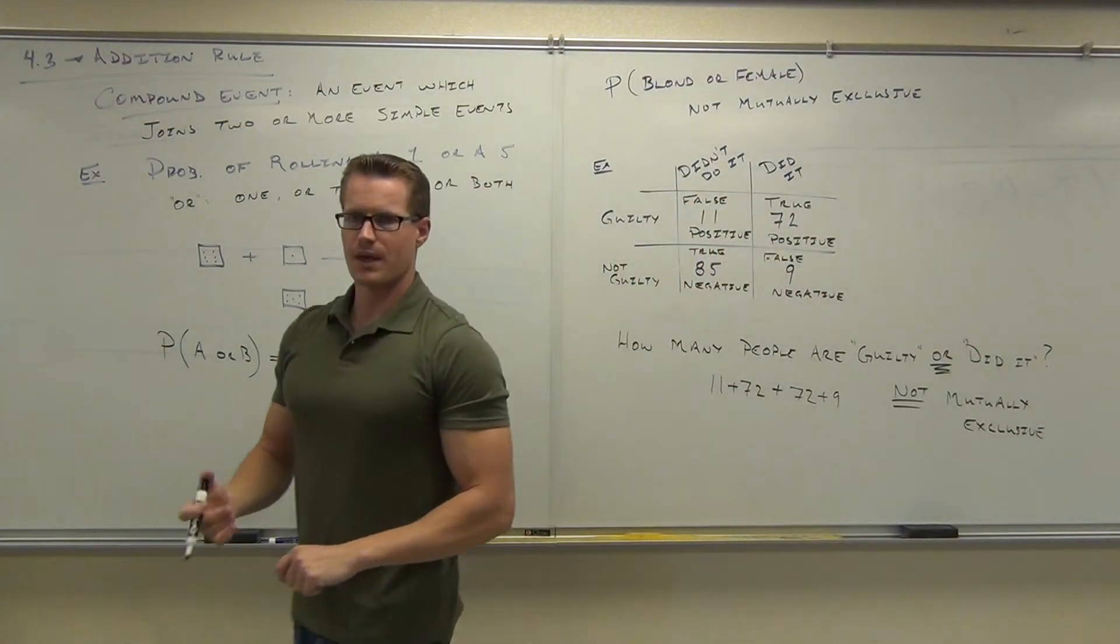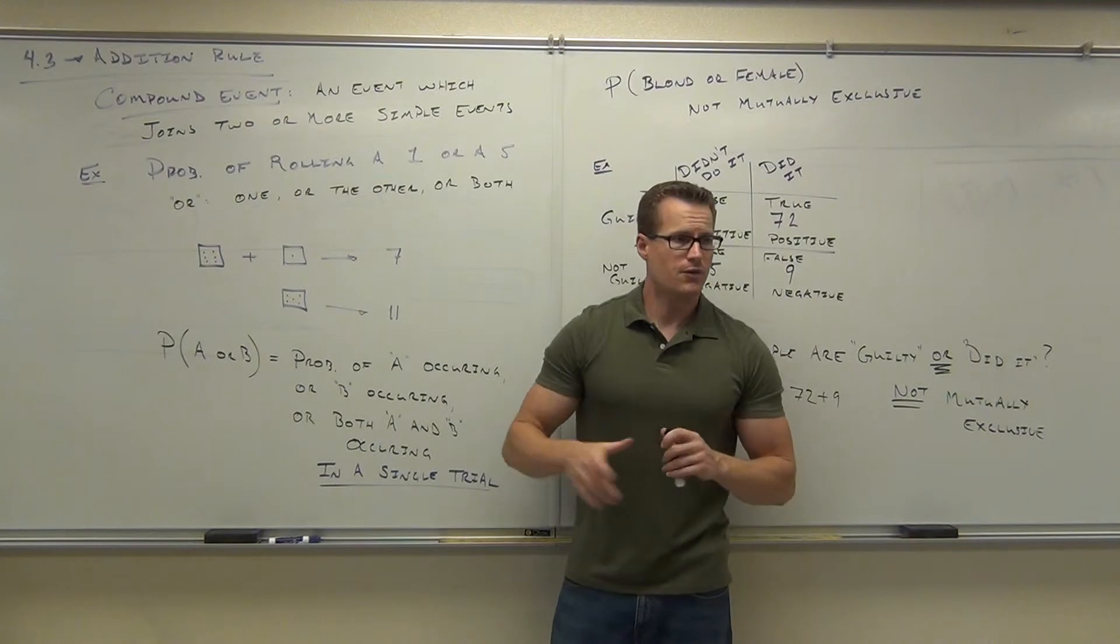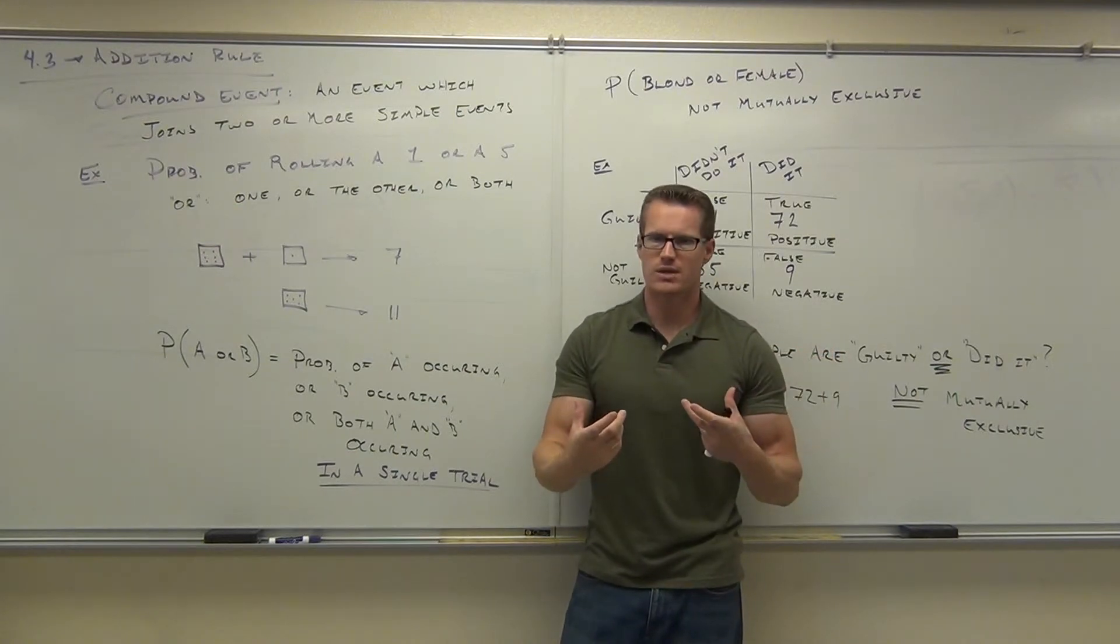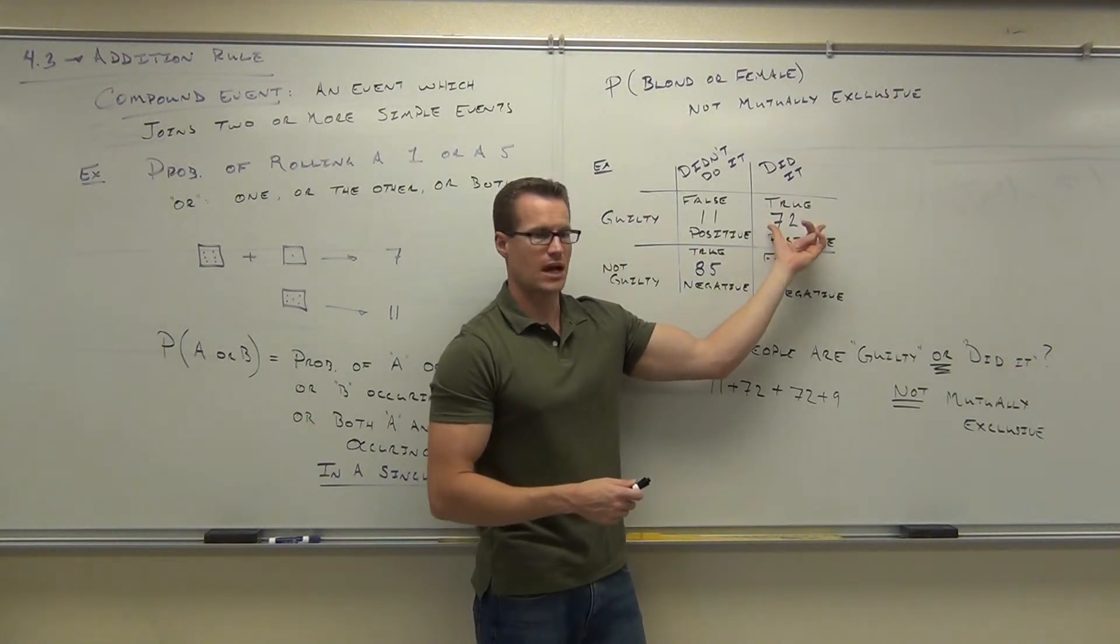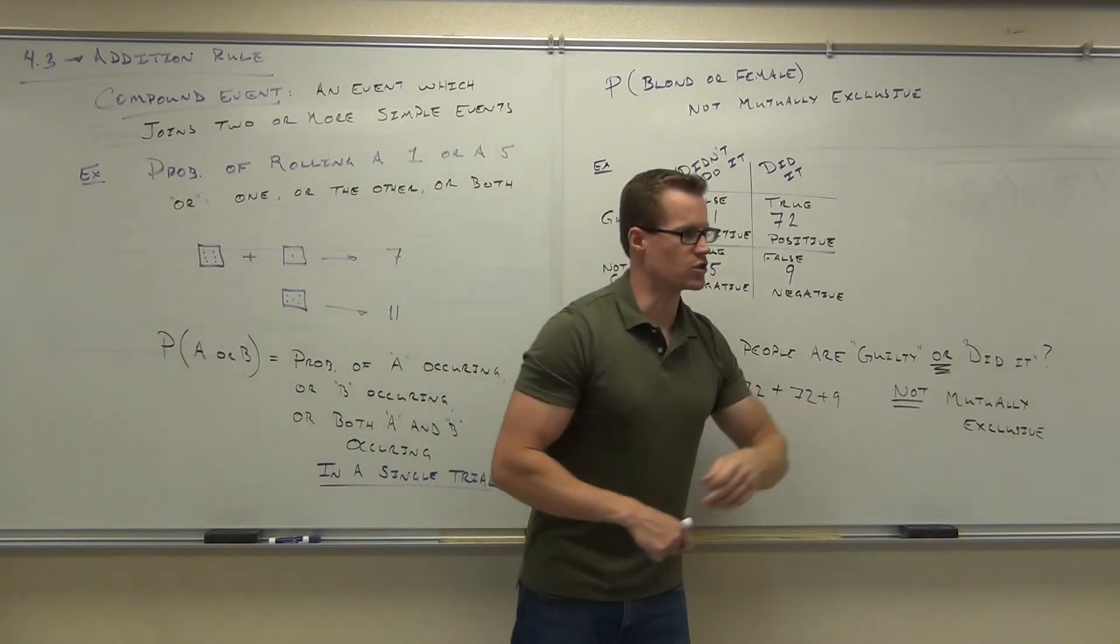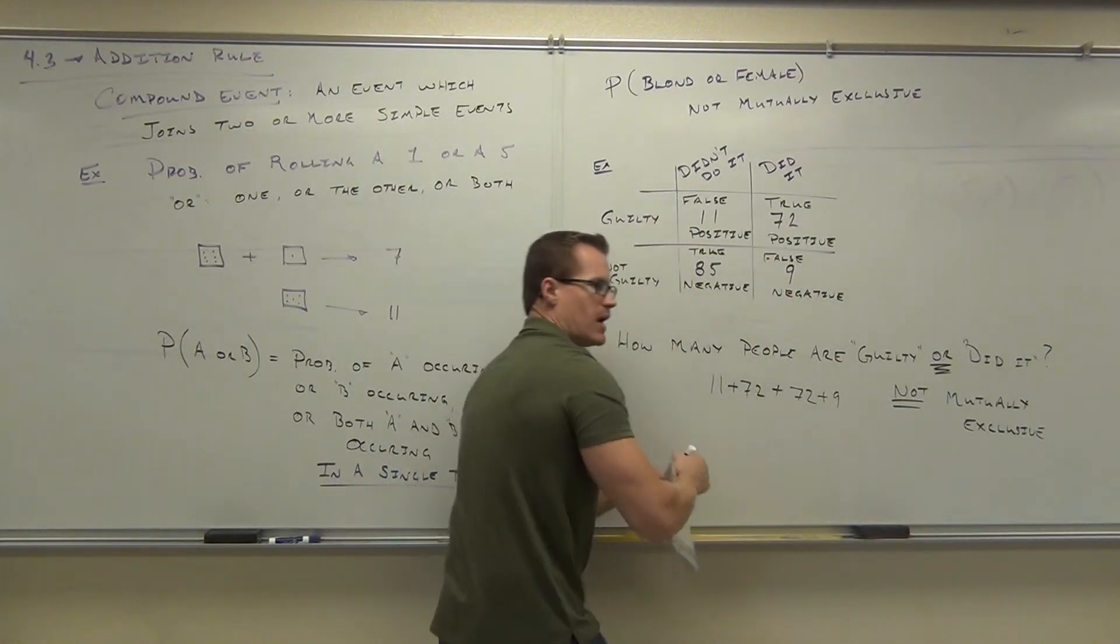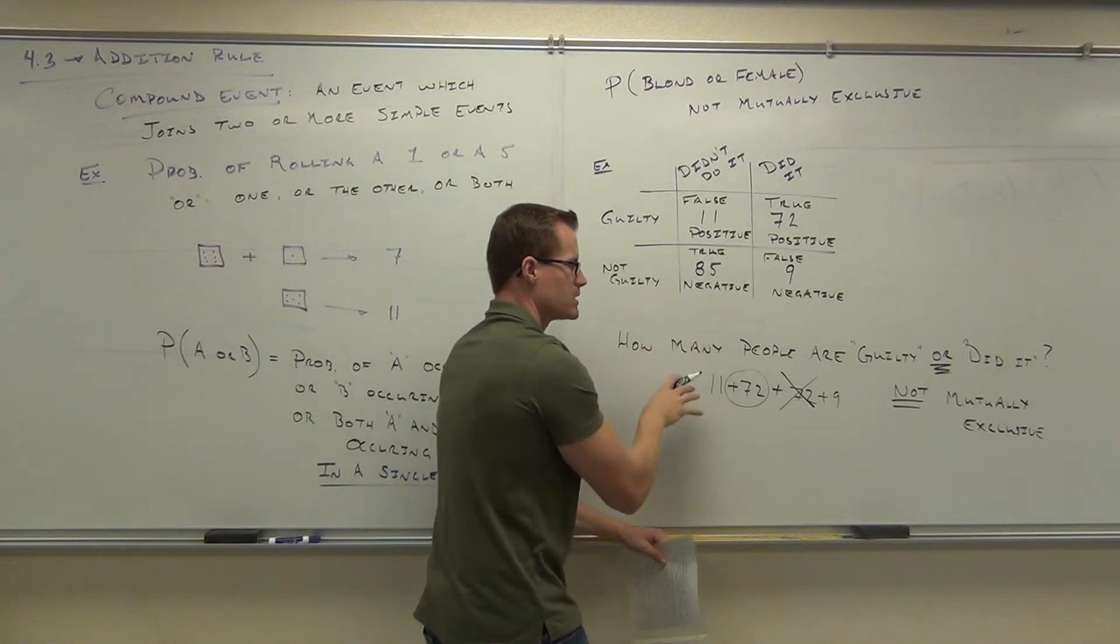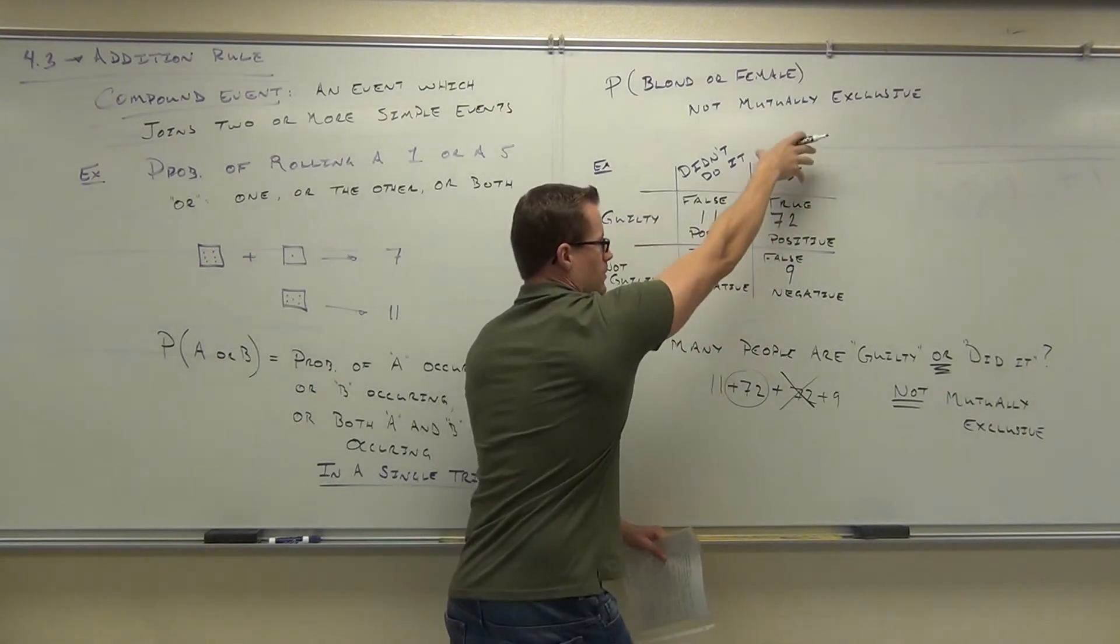The thing you have to watch out for in events which are not mutually exclusive is something called the double count. Here, if you were to find the probability, which we will do, if you were to find the probability of rolling a 1 or a 5, there's no way you can be both a 1 or a 5. So you can't possibly double count that occurrence. But here, there are 72 ways you can be both guilty and did it. You can count this by 72 extra. So we have to find some way to eliminate this double count. That's what the addition rule is going to do for us.